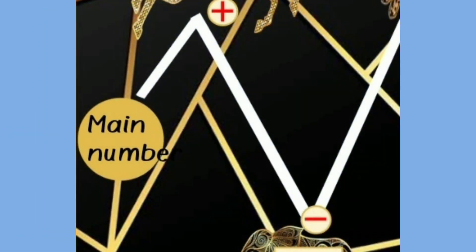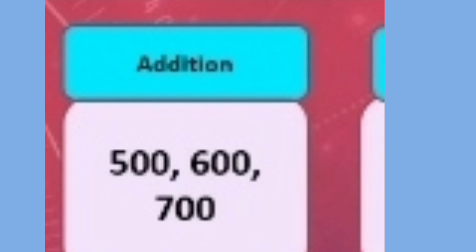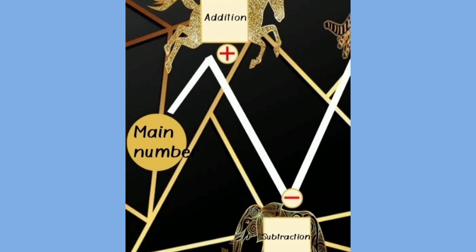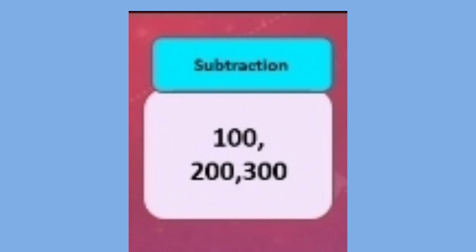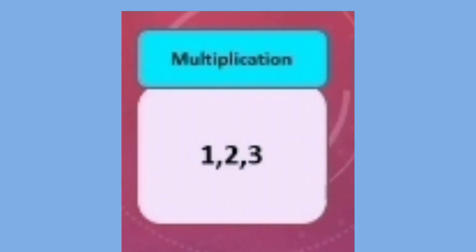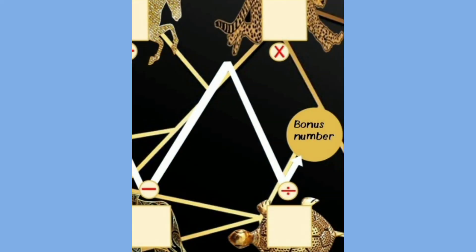You have to start the game from the main number — keep the main number in mind. You have to travel to the addition zone and add the given number. You will find three numbers in it, so you can choose any one of the three and add it to the main number. Then travel to the subtraction zone, choose any one number from the three, travel to the multiplication zone and multiply with your earned total score, then travel to the division zone and divide. Do the same four operations again, then travel to the bonus number and add it.